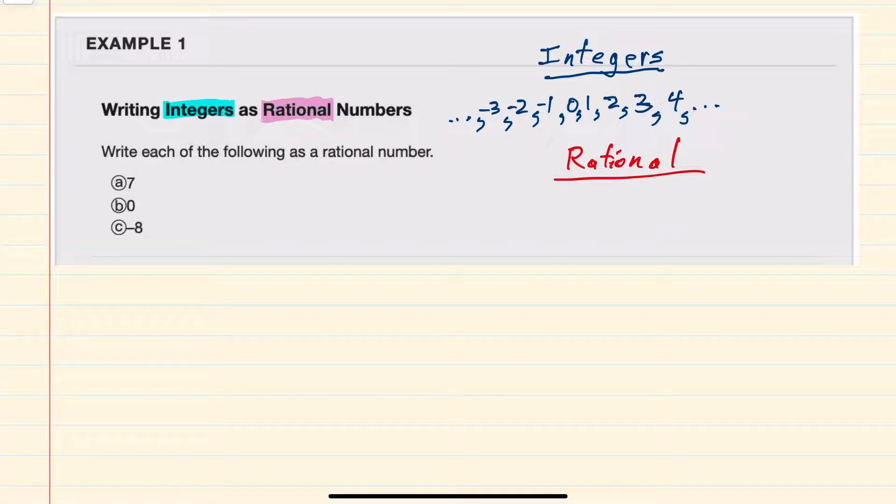And then for rational numbers, those are numbers that can be written in fractional form, m over n, where both m and n are integers. Of course, n cannot be equal to 0.